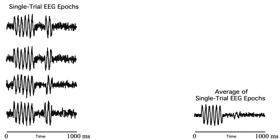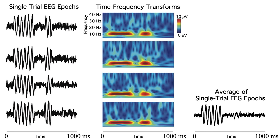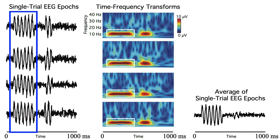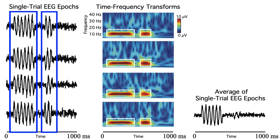Here are all four of our single-trial EEG epochs, and here's the time-frequency transform for all of them. The x-axis represents time, just as in the original EEG epochs, but now the y-axis represents frequency. The color at each location in this two-dimensional space represents the magnitude of a given frequency at a given time. You can see the first burst of alpha-band activity, and also the second burst. But we're plotting amplitude independent of phase, so we can see that the second burst is happening at approximately the same time on each trial.